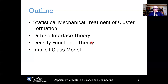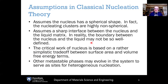The outline for today is that we are going to cover four different types of advanced nucleation theories. The first one is based on statistical mechanical treatment of cluster formation. The second is based on diffuse interface theory, then density functional theory—it's a different type of density functional theory—and then the implicit glass model. Let's start with some motivation for why we would want to go beyond classical nucleation theory.